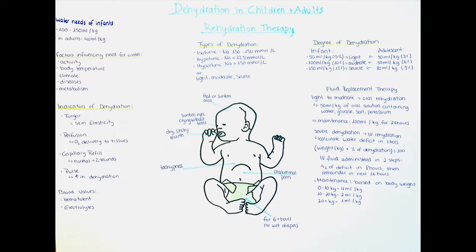Let's start with symptoms of dehydration. The skin can be very revealing for a number of reasons. The first indicator we will look at is turgor — the skin's elasticity — and in dehydration, the turgor often decreases. The next is perfusion, which refers to the amount of oxygen delivered to the tissues of the body. In dehydration, the blood volume can drop, leading to a reduction of perfusion to the different tissues, causing the skin to get a so-called marbled appearance.